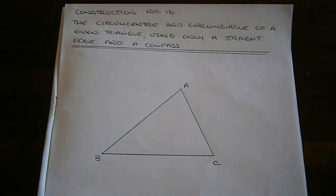Construction number 16, to construct the circumcenter and the circumcircle of a given triangle using a compass and a straight edge. So I'm going to construct the perpendicular bisectors of two sides.